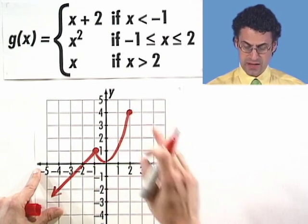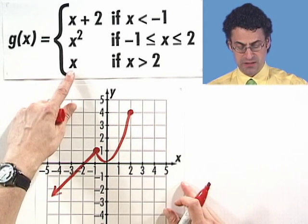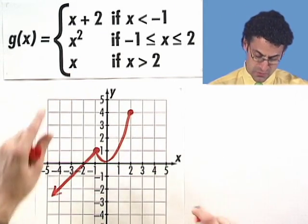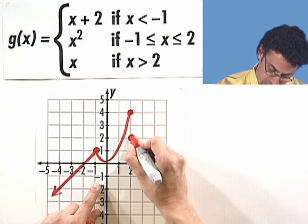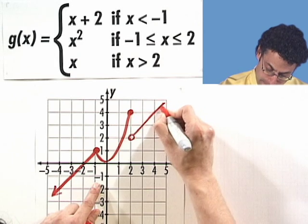And then what happens when x is greater than 2? Then I'm actually going to be lying on the line y equals x, which is the line that goes to the center and has slope 1. So I start an open circle right here and go straight out like that.